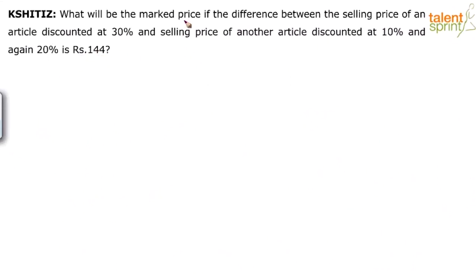She is asking us to find out the marked price if the difference between the selling price of an article discounted at 30% versus selling price discounted at 10% and again at 20%. There are two different cases here. You have to look at the selling price when the article is discounted by 30% and you have to look at the selling price when the article is discounted by 10% followed by another discount of 20%. The difference between these two selling prices is rupees 144.